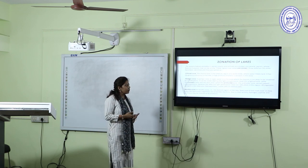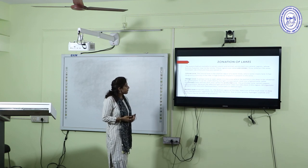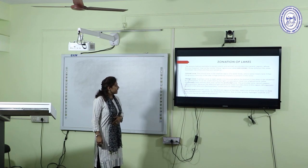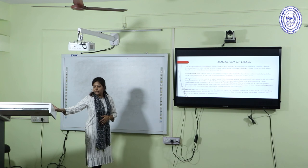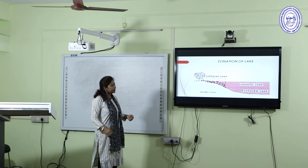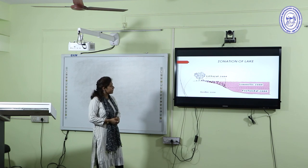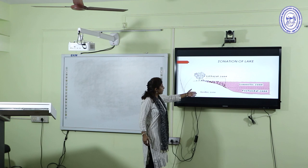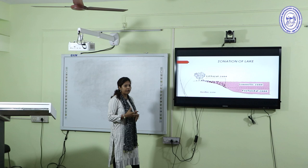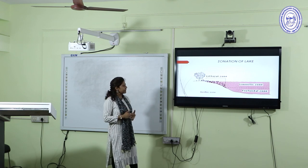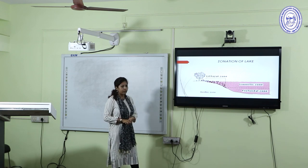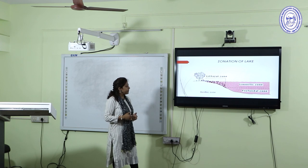Moving on to the zonation of surface water, specifically lakes. Lakes are generally divided into three zones: the littoral zone, the pelagic zone, and the benthic zone. The benthic zone is the anaerobic, muddy layer of the lakes where oxygen availability is less, and only anaerobic microorganisms are found that generally produce methane gas.